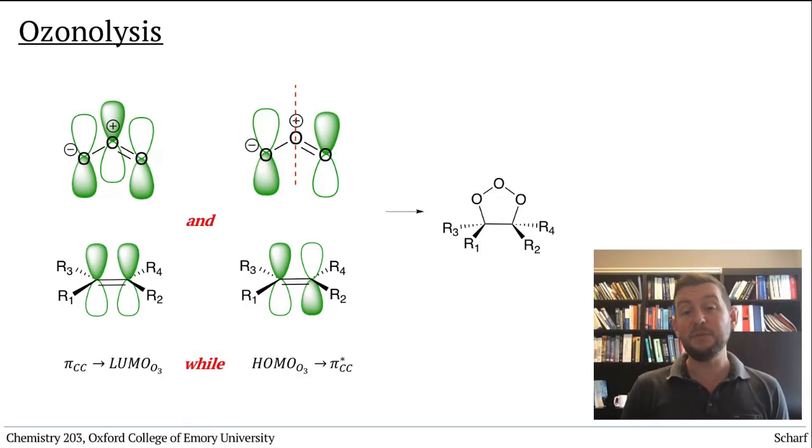This type of reaction, in which a conjugated system's HOMO and LUMO react simultaneously to form a new ring, is called a cycloaddition, and it's a very important class of chemical reactions.